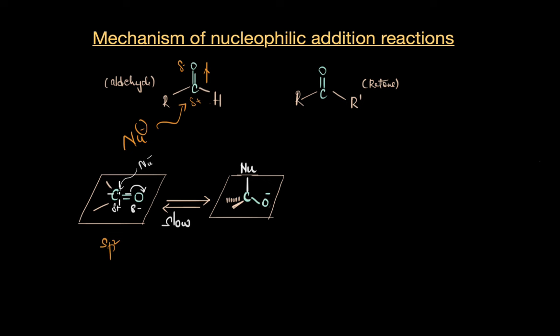This addition of nucleophile changes the hybridization state from sp2 to sp3. Now this is a slow step because forming a new bond between the nucleophile and the carbonyl carbon requires some significant rearrangement of electrons.